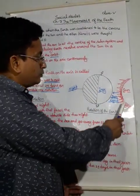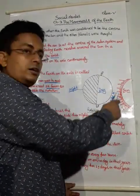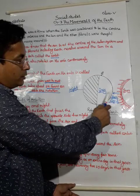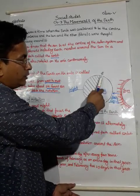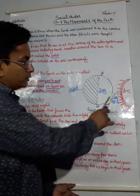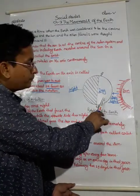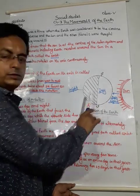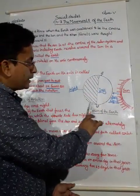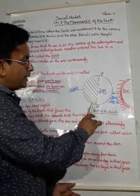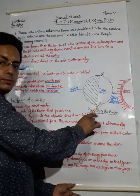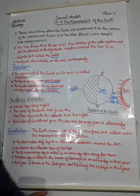I have drawn a diagram for you. Here is the Sun and here is our Earth. When sunlight falls on the earth, only one side faces the light — the side facing the sunlight has daytime, and the other side that doesn't get sunlight has nighttime. The lit portion is day and the dark portion is night.